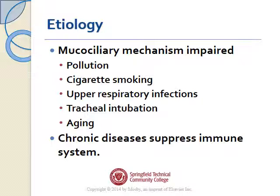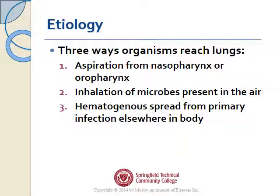What can cause your defenses to become compromised? You can have the mucociliary mechanism impaired through pollution, cigarette smoking, upper respiratory infections like a bad sinusitis, or tracheal intubation — if you have a breathing tube placed, it's going to stent open your airway and allow all sorts of organisms to get in. Natural aging can also make a person more susceptible, and chronic diseases will suppress your immune system.